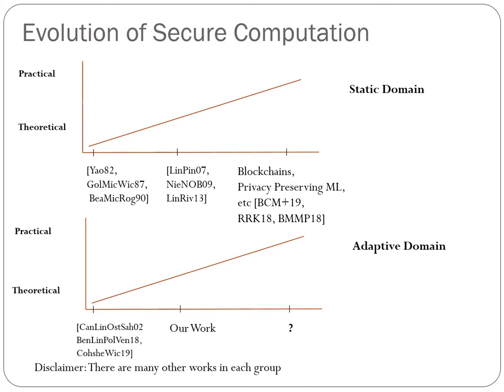These have been further improved to obtain practically efficient secure computation protocols, with applications in blockchains, privacy-preserving machine learning, and many other areas. But adversaries in real life are adaptive — they can corrupt the parties during or after the protocol. The first adaptively secure protocol was constructed by Kennedy, Lindell, Ostrovsky, and Sahai following the GMW paradigm.